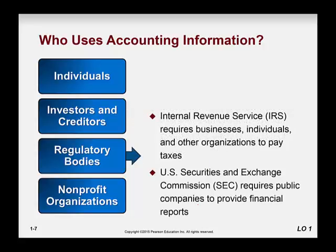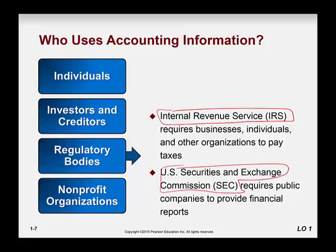Then we have regulatory bodies, and you would definitely want to make sure you have all of these acronyms at your disposal. I would recommend you put these acronyms into an Excel workbook so you can keep them readily available. Obviously the IRS — everyone has to pay taxes, including organizations. And then you have the Securities and Exchange Commission, which requires public companies who sell stock. You might have heard of IPO — Initial Public Offering. And if you are trading your stock on the U.S. Stock Exchange, you need to produce financial statements, and the SEC is the regulatory body that oversees that.